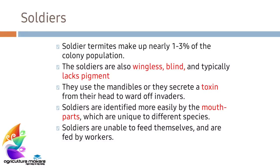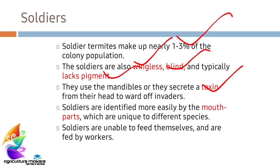Soldiers make up one to three percent of the colony's population. They are also wingless and blind, and they too lack pigment. They use their mandibles to secrete a toxin from their head to ward off invaders, which is why they are called soldiers. Soldiers are identified more easily by their unique mouthparts, and they are unable to feed themselves — they are fed by the workers.